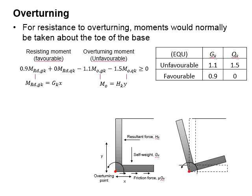For a retaining wall to resist overturning, the moment would normally be taken above its tall base, which is this point.